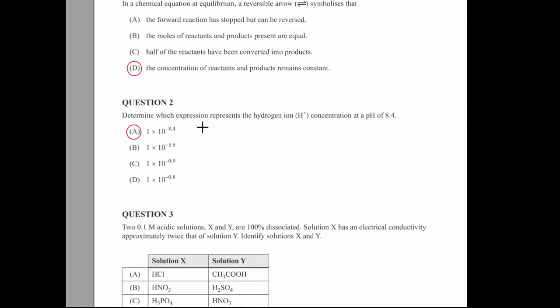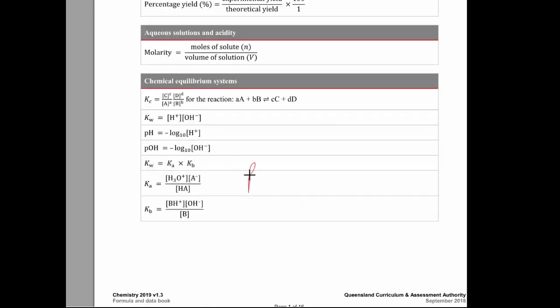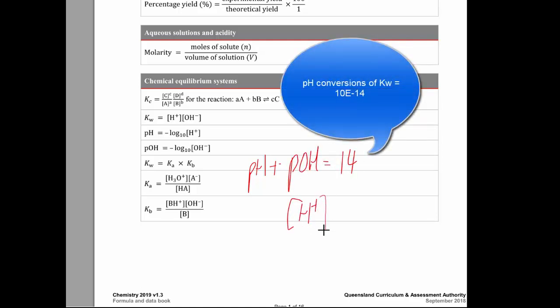So moving to the next one. Now, this one is quite interesting because there's two things that aren't in your data booklet. One is the value of KW, and the other one is the hydrogen ion concentration is 10 to the minus pH. So that one's also pH plus POH equals 14, and hydrogen ion is 10 to the minus pH. So those things you need to memorize because they're not there in the data booklet.